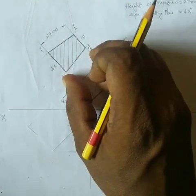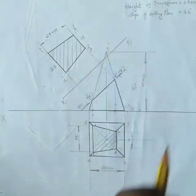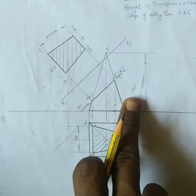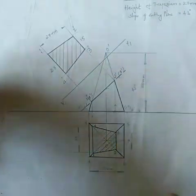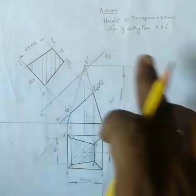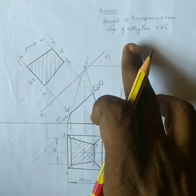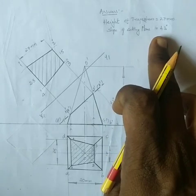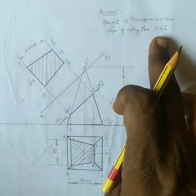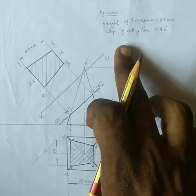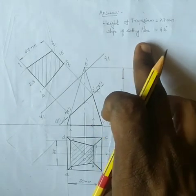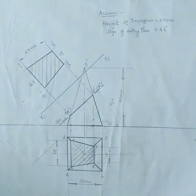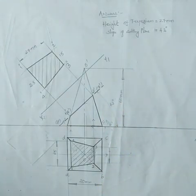That is 27mm. This is the cutting angle, that is 43 degrees. The answer is: the height of the trapezium is equal to 27mm, and the inclination of the section plane is equal to 43 degrees.